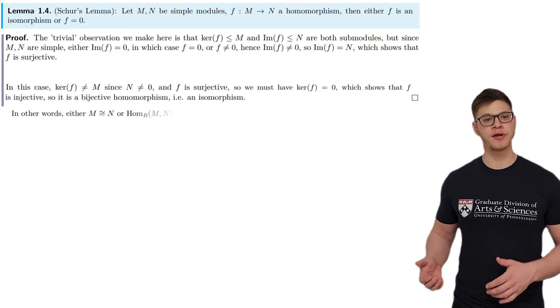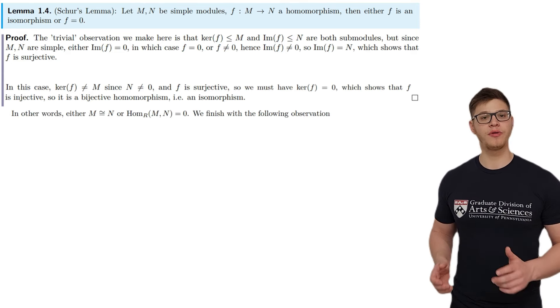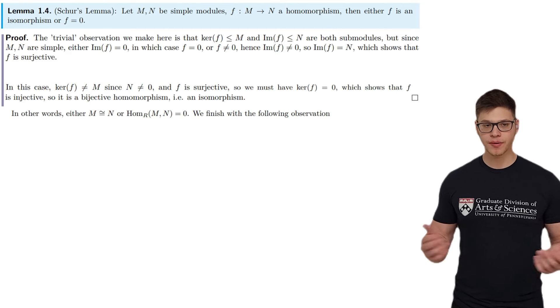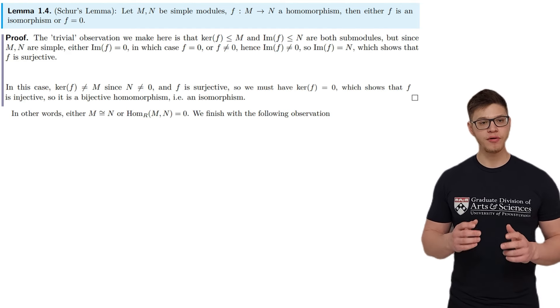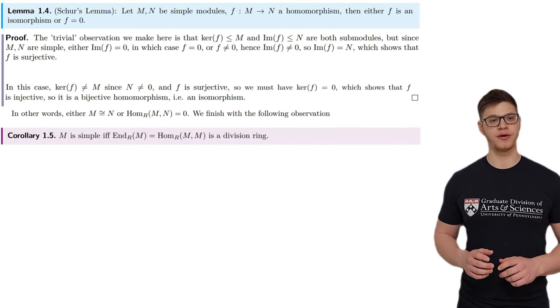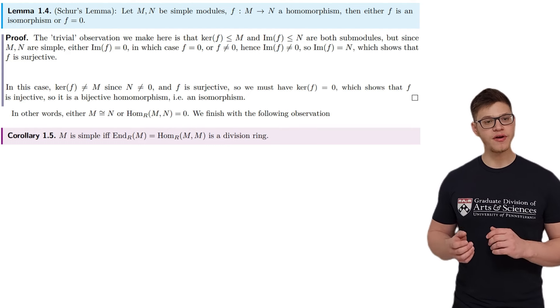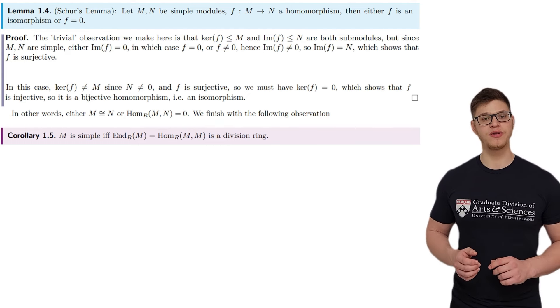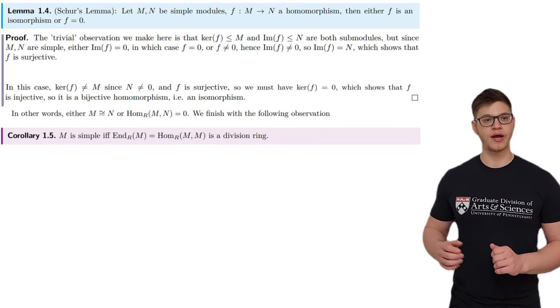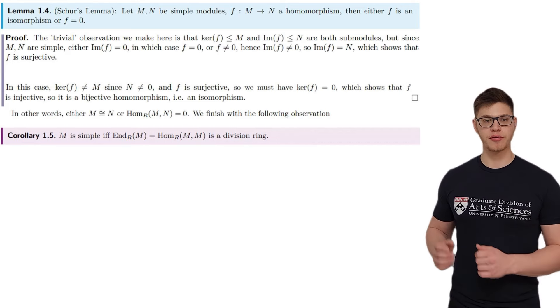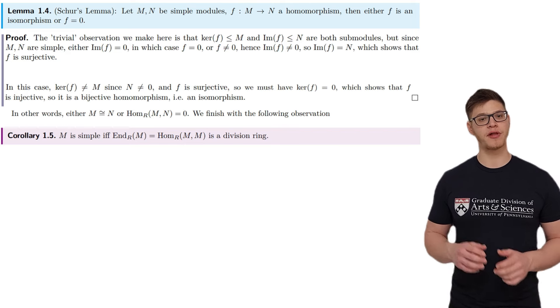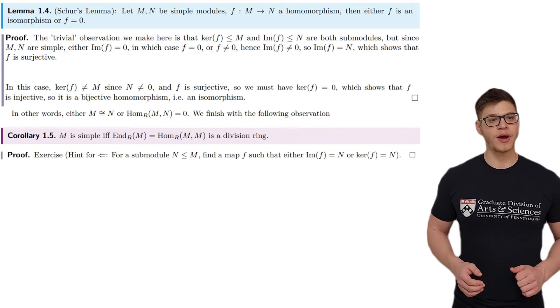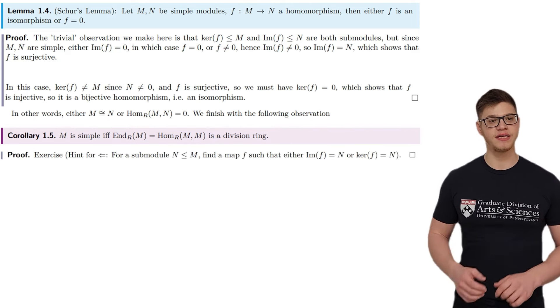In other words, either M and N are isomorphic, or there are no maps between them besides the zero map. We finish with the following observation: M is simple if and only if the ring of module endomorphisms of M is a division ring, where multiplication is composition. The proof is left as an exercise. For the right to left direction, I left a hint on screen.